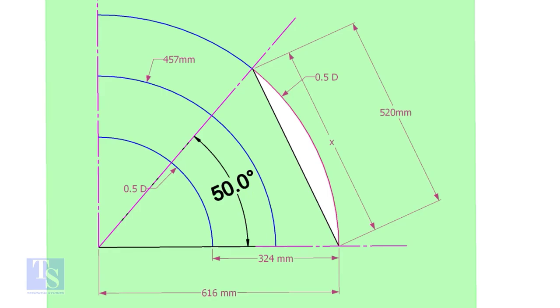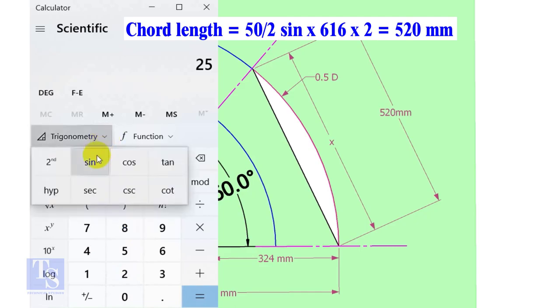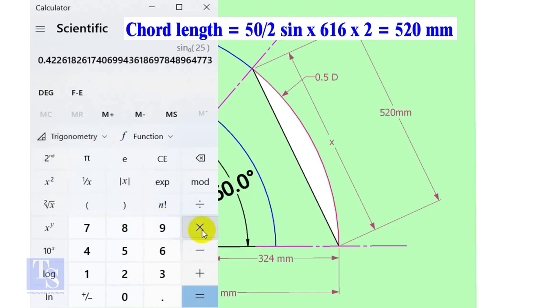Here the degree is 50, and the radius is 616 millimeters. Chord length equals 25 sine multiplies 616, multiplies 2 equals 520 millimeters.